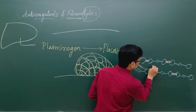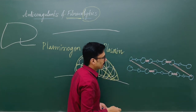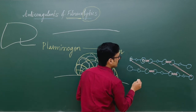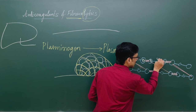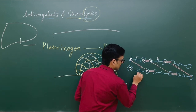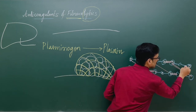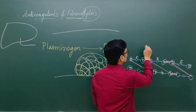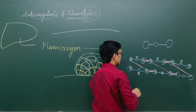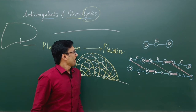In the previous class I explained the structure: this is the D domain, this is the D domain, and the center is the E region. So each monomer has peripheral D domains and a central E domain — D-D center E, D-D center E. This is the fibrin monomer: peripheral D domains, central E domain.